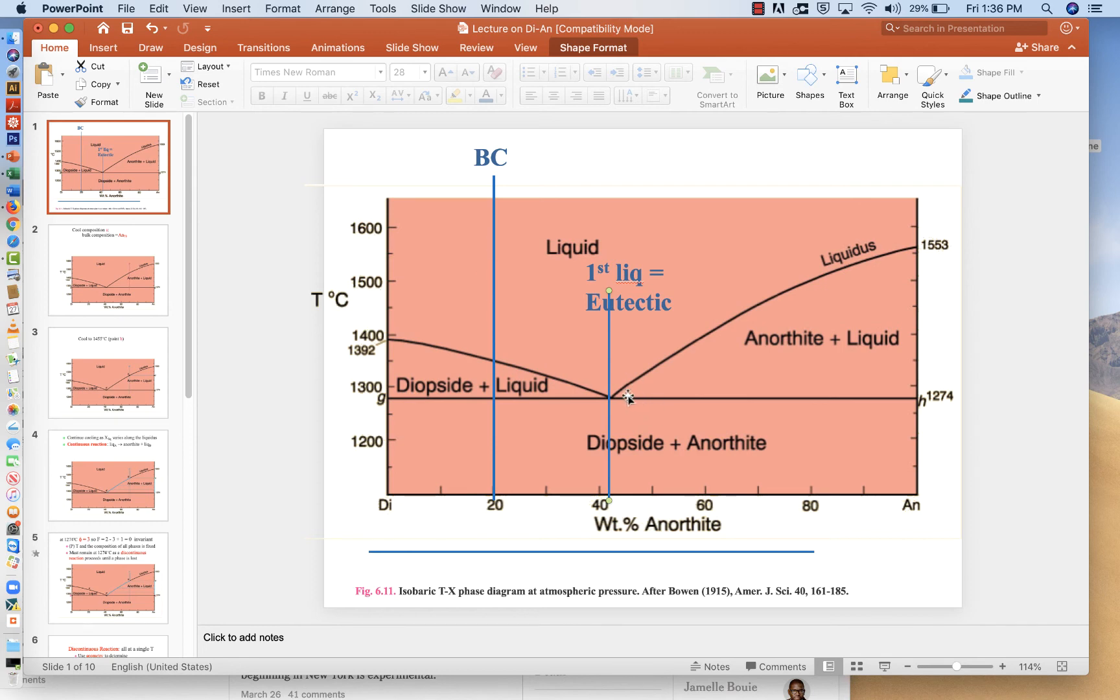So just to review, if we take a rock that has this bulk composition of diopside plus anorthite, the first liquid will be the eutectic. That eutectic liquid is at about 42 weight percent anorthite here, where these two curves meet.